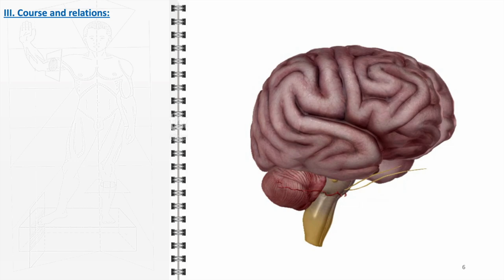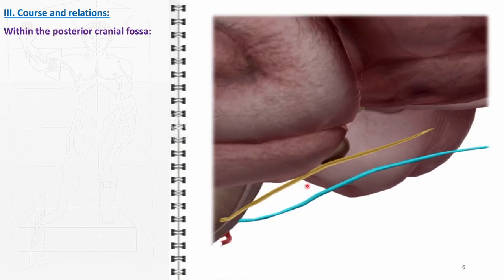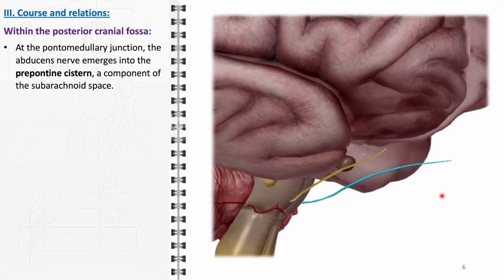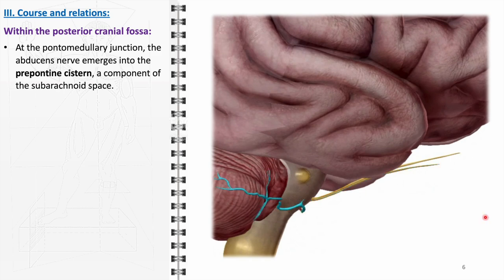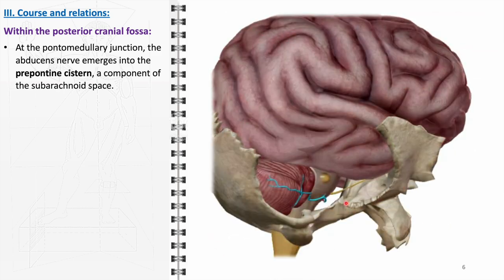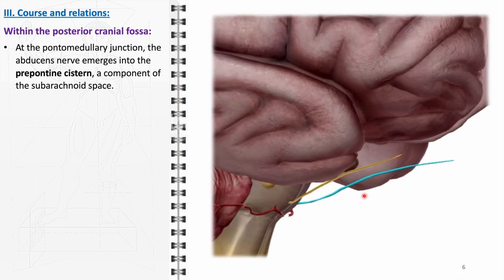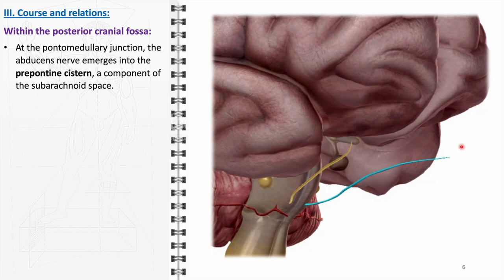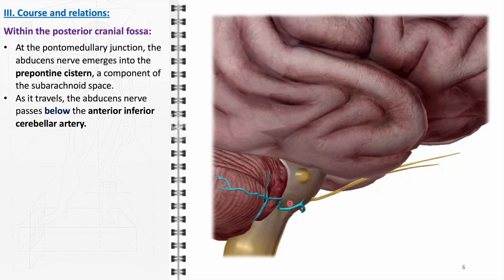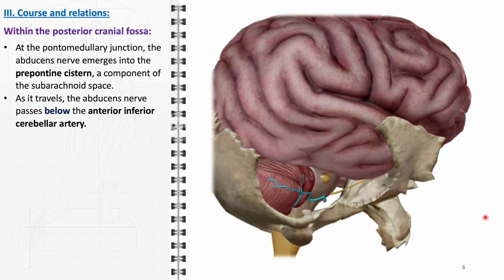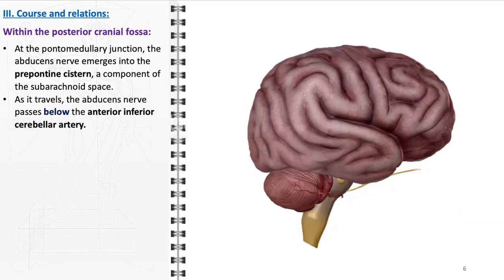The course of the abducens nerve within the posterior cranial fossa is a journey marked by several critical anatomical landmarks and relationships. After originating from the abducens nucleus in the pons, the nerve emerges at the pontomedullary junction, entering into the prepontine cistern, which is part of the subarachnoid space. This initial phase of its course is pivotal as the nerve navigates through an area filled with cerebrospinal fluid, providing a protective cushioning. As the abducens nerve extends forward, it passes beneath the anterior inferior cerebellar artery, an anatomical relationship that holds clinical importance, as any vascular anomalies can potentially impact the nerve.